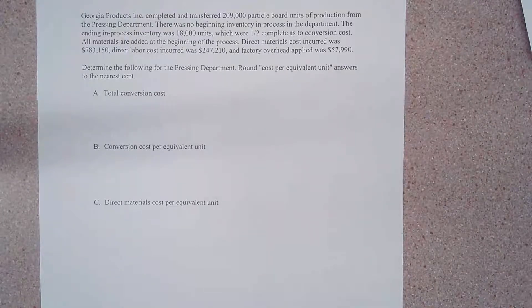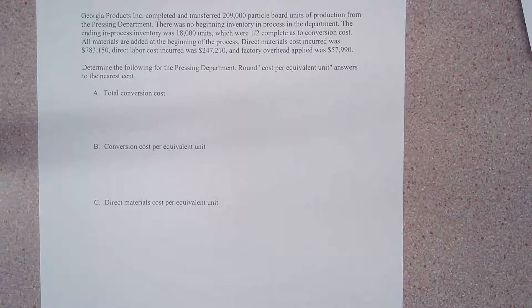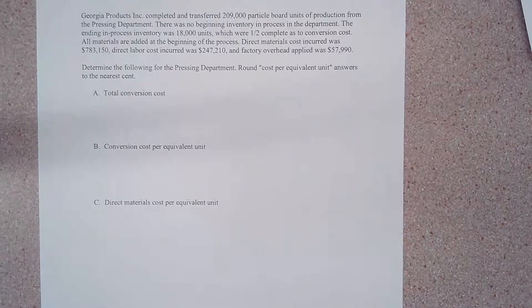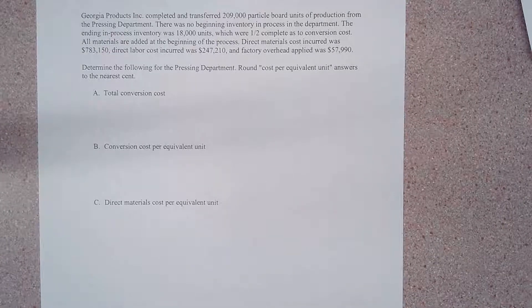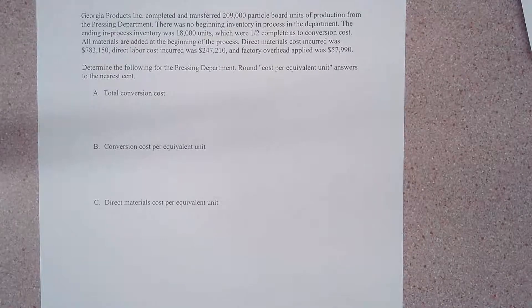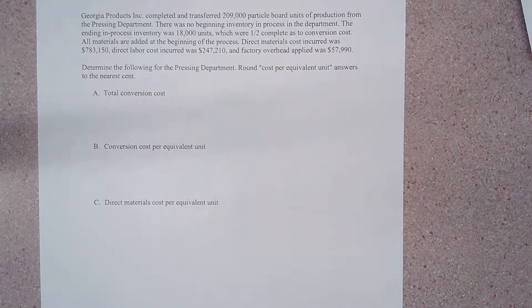Direct materials cost incurred was $783,150. Direct labor cost incurred was $247,210, and factory overhead applied $57,990. Now says determine the following for the pressing department: round your cost per equivalent unit answers to the nearest cent.